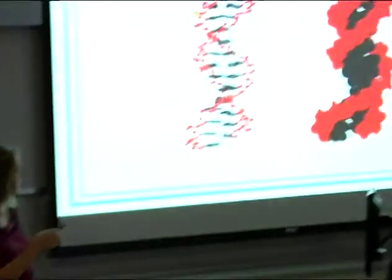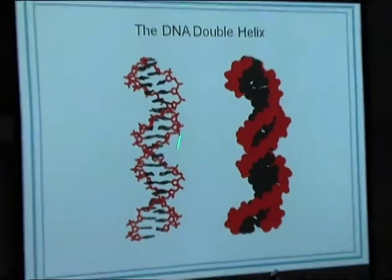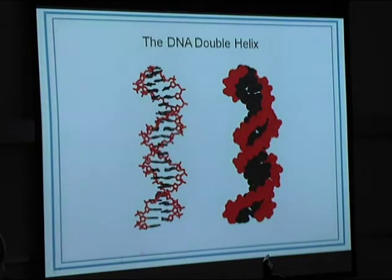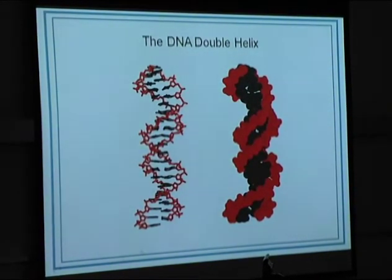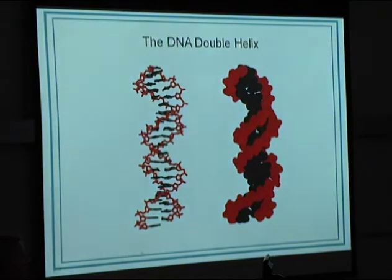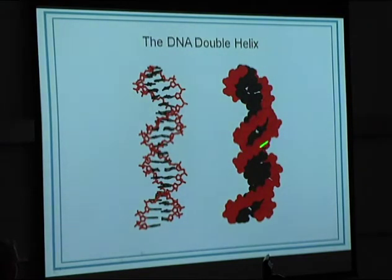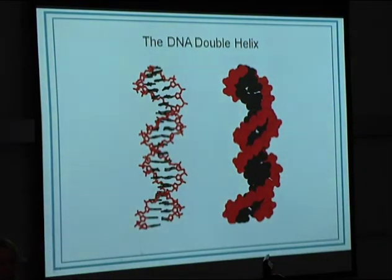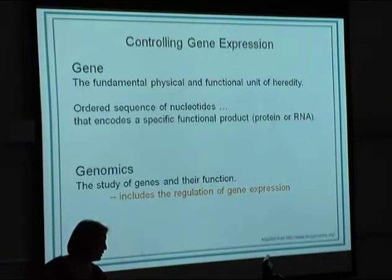This is what DNA looks like — two different ways of looking at the same thing. One shows the bonds; the other shows where electrons fill the space. We're going to look at proteins and small molecules that interact with DNA. Often they bind in the groove between the two strands — called the minor groove of DNA — the space between the backbone, where we have our negative charge and sugar.